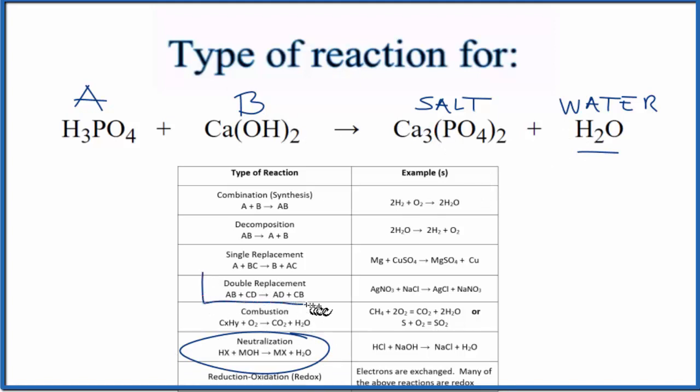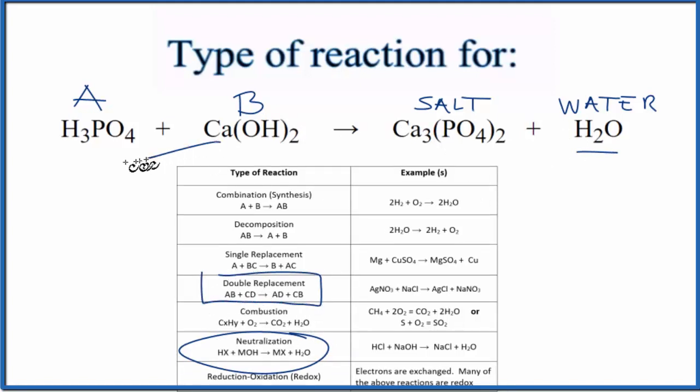But it's also double displacement. That's because the calcium and the hydrogen, they switch places, they replace each other. So now we have the hydrogen going with the OH, HOH, that'll give us H2O, same thing. And the calcium goes with the phosphate, the PO4, and we get calcium phosphate. So it's also a double displacement.